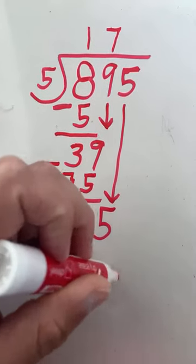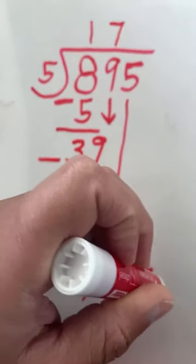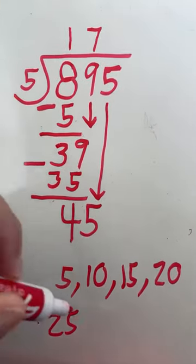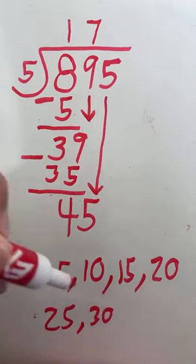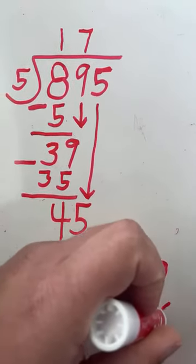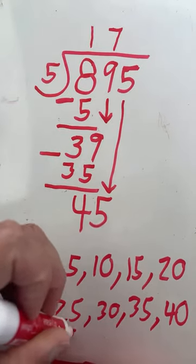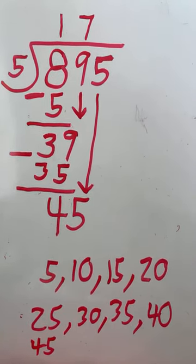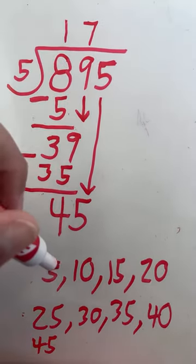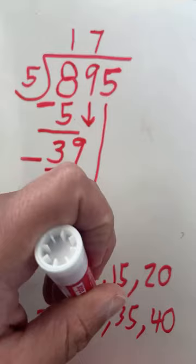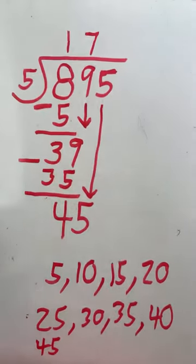5, 10, 15, 20, 25, 30, 35, 40, 45. So let me see how many times I had to count by 5 to get to 45. We had to count by 5: 1, 2, 3, 4, 5, 6, 7, 8, 9 times.